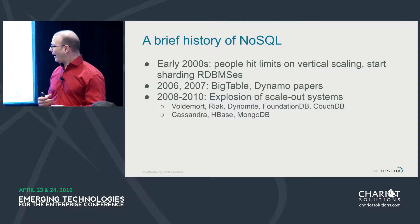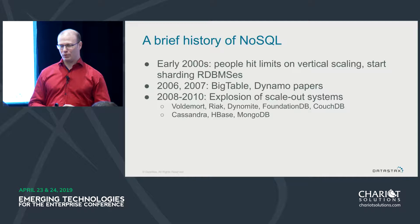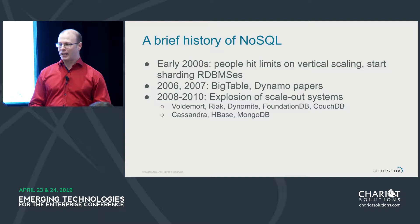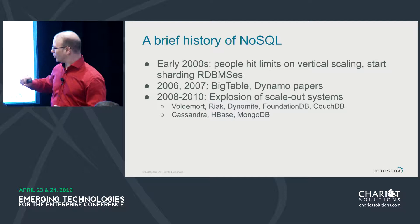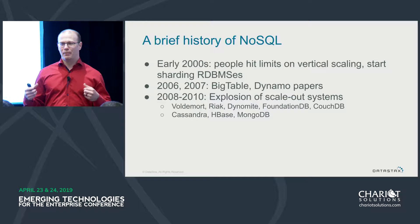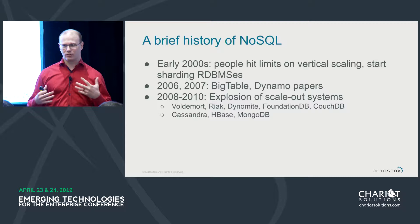Then some of the other big internet companies — Amazon published a paper on a database called Dynamo, not to be confused with DynamoDB 10 years later — but the idea is we're hitting this same problem of needing to scale out data for the applications we're building. Google published the Spanner paper around the same time. Then you started getting this explosion of mostly open source projects like Voldemort and others. These are all projects that are not successful and not being actively used today. A few more are still around: Cassandra, HBase, and MongoDB.